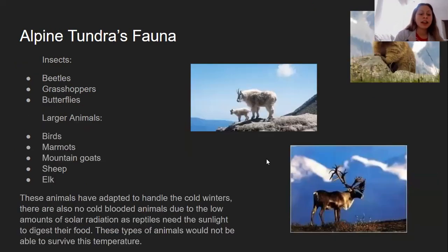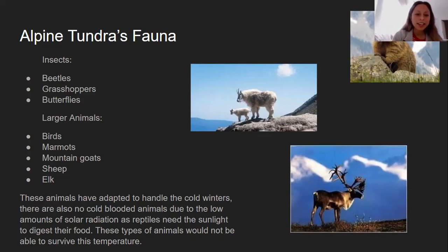The second type is alpine tundra fauna, which includes insects such as beetles, grasshoppers, and butterflies. Larger animals tend to be birds, marmots, mountain goats, sheep, and elk. Many of these animals are migratory — they stay during the warmer months, around July, when the northern hemisphere is tilted toward the sun and days are longer with almost no nights. They then migrate south for the colder months.